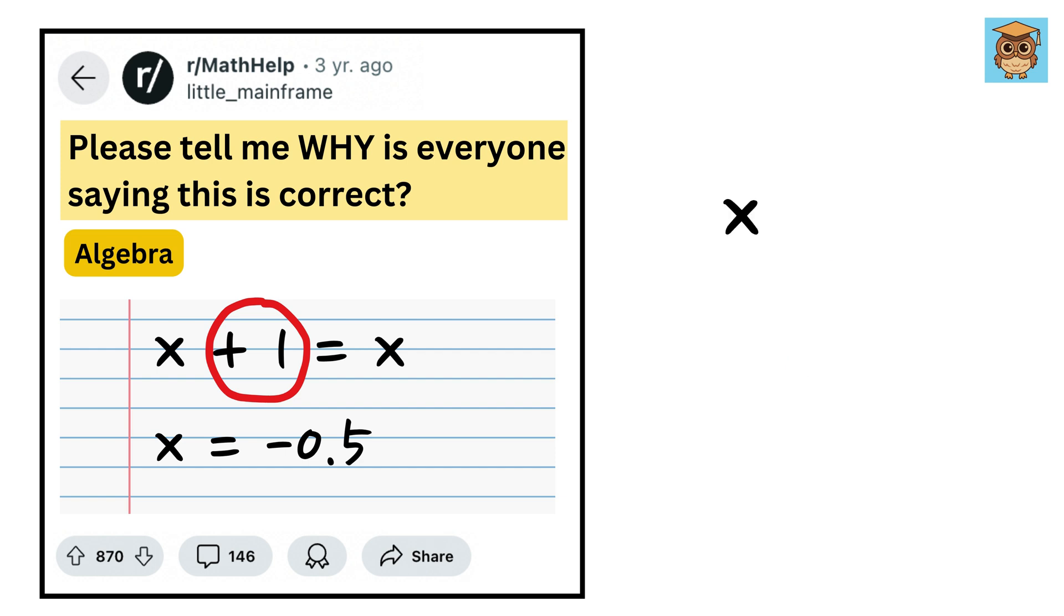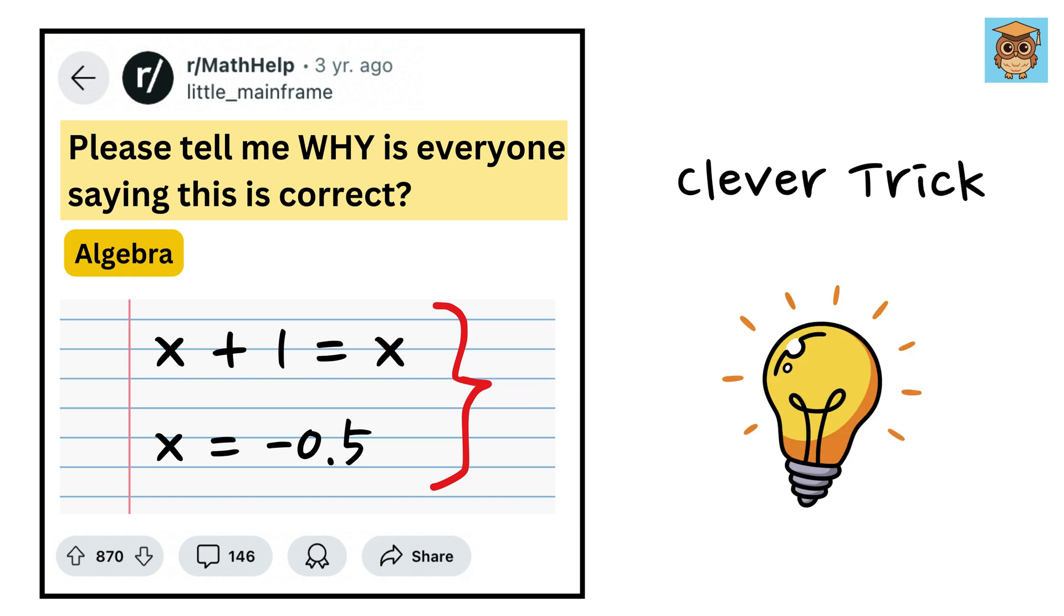Similarly, if you take any number and add one, it's impossible to still have that same number. So logically, the equation doesn't make sense. This is why x plus one equals x seems wrong from the start.